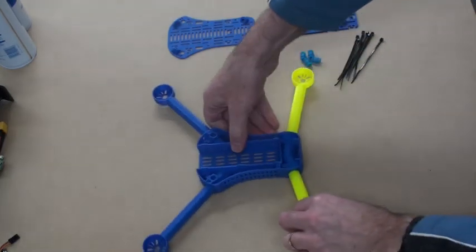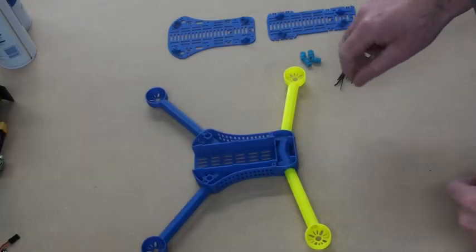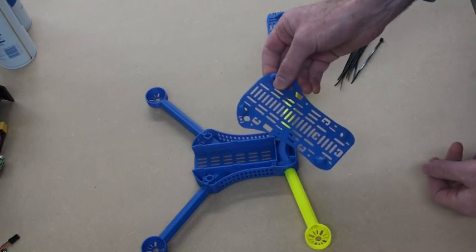Alright, so that's stage one. The arms are attached to the body. Alright, so stage two is fixing the top plate.